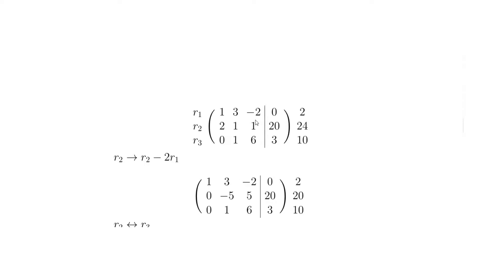Now we do a row sum check to make sure we haven't made any mistakes. Minus 5 plus 5 plus 20 gives us 20, and if we perform this row reduction on the sum row check as well — 24 minus 2×2 gives us 20. So we know we haven't made any mistakes there.